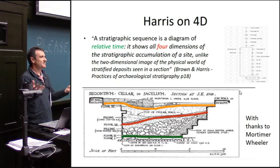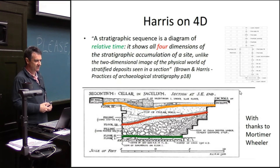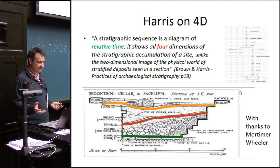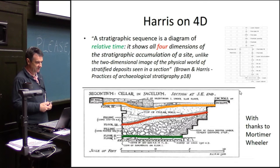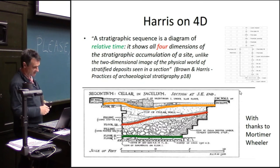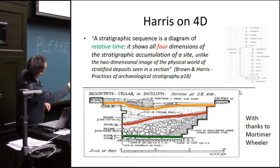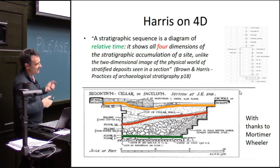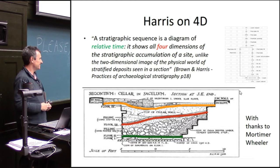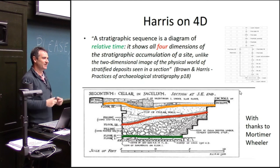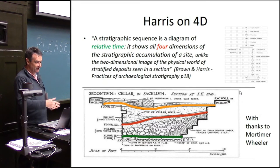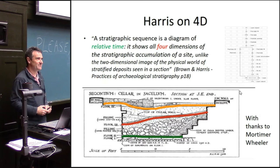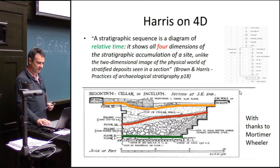What Harris, who initiated this stratigraphic approach to single-context and matrix diagrams, says about it is: 'A stratigraphic sequence is a diagram of relative time.' He says it shows all four dimensions of the stratigraphic accumulation of a site, unlike the two-dimensional image of a stratified deposit seen in a section. What Harris is talking about is that this diagram is represented in 4D, whereas a section is created in 2D. As an archaeologist, I don't really see four dimensions springing out of that diagram, but I do understand his point — he's trying to introduce time into the matrix.